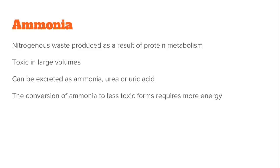The nitrogenous waste the body produces is in the form of ammonia, which results from the breakdown — or metabolism — of proteins. In large volumes, ammonia is quite toxic. Ammonia can be excreted in a few forms: as ammonia itself, urea, or uric acid. When converted to urea or uric acid, the waste becomes less toxic, but progressing along that process does require more energy.